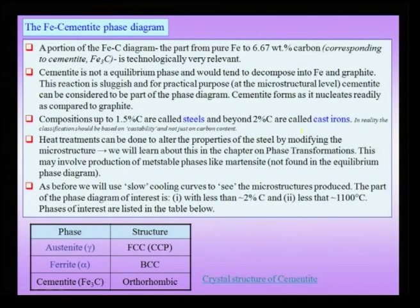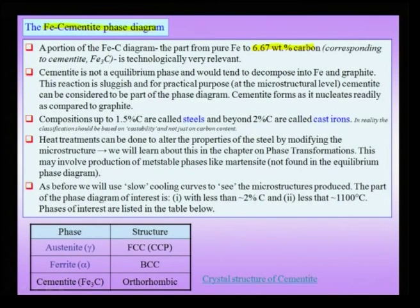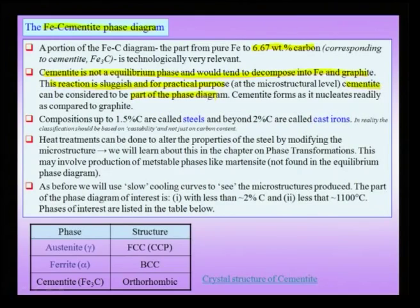The iron-cementite phase diagram is very important, both technologically and as an illustrative example of phase diagram concepts. The carbon percentage corresponding to cementite is 6.67 weight percent — in atomic percent carbon is 25 percent, but being a light element, it is only 6.67 weight percent. Cementite is not an equilibrium phase and tends to decompose into iron and graphite, but this reaction is very sluggish, so cementite is treated as part of the phase diagram for practical purposes.